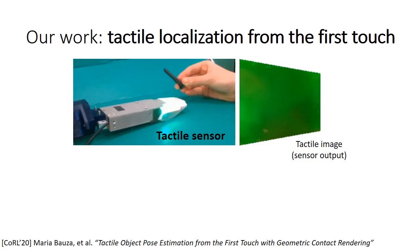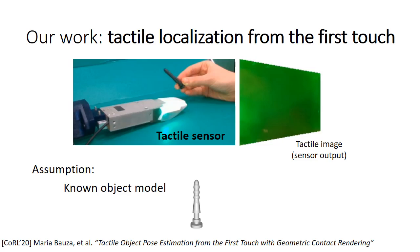Instead, in this work, we aim at solving tactile localization from the first touch. This means that we do not require any previous contact with the object or an external perception system. Instead, we assume that we know the object model beforehand. Note that this is a category that fits many industrial settings.